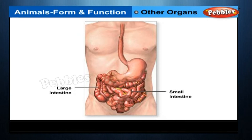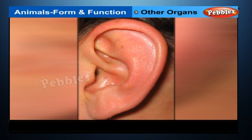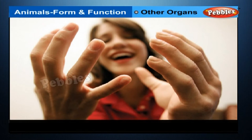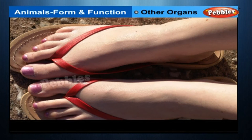External organs include, for example, the ear, eye, arms, legs, hands, and feet.